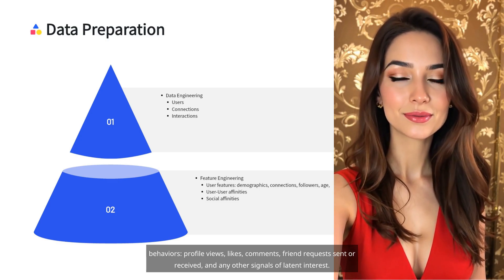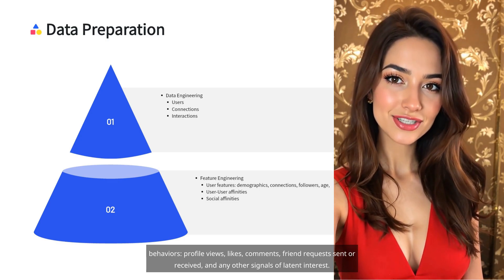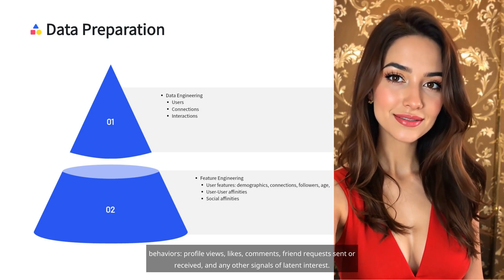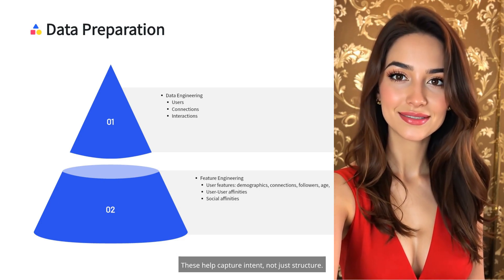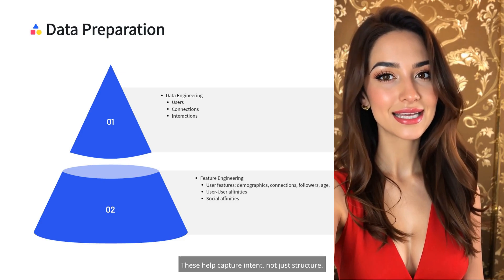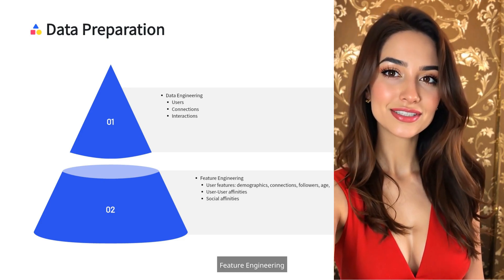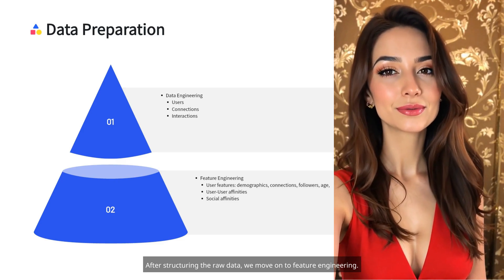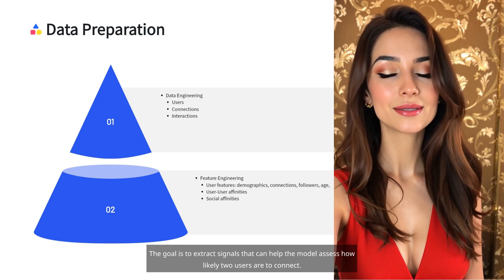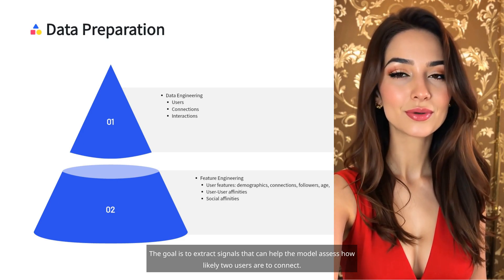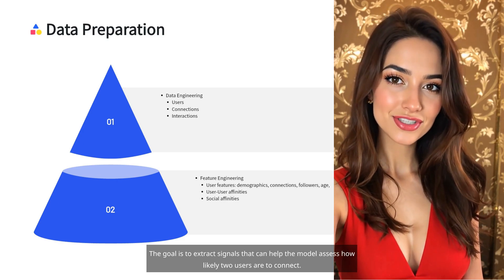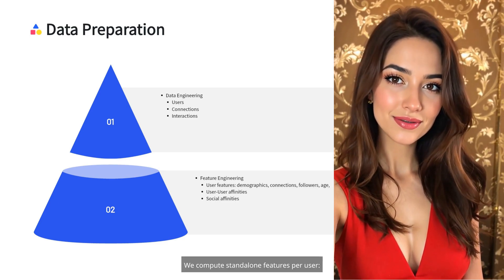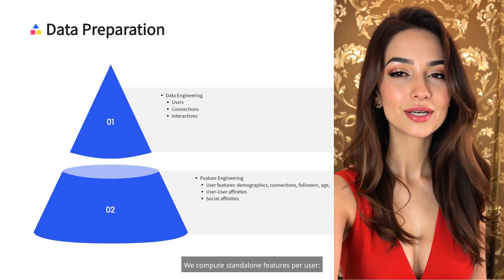Interactions: going beyond static connections, we look at dynamic behaviors — profile views, likes, comments, friend requests sent or received, and any other signals of latent interest. These help capture intent, not just structure. After structuring the raw data, we move on to feature engineering. The goal is to extract signals that can help the model assess how likely two users are to connect.